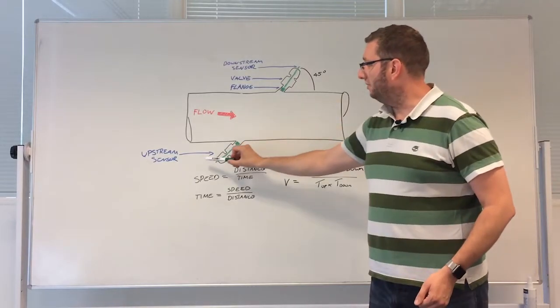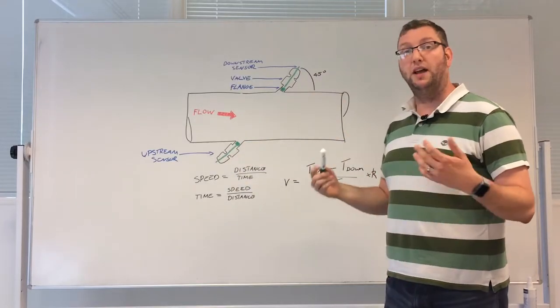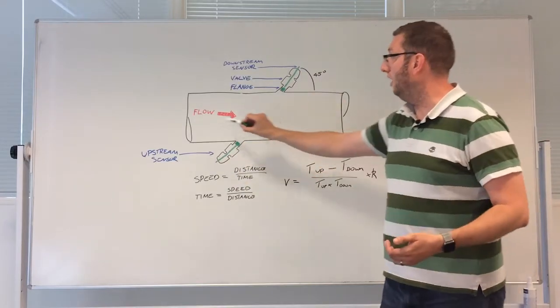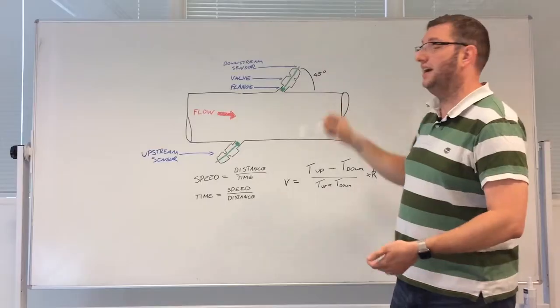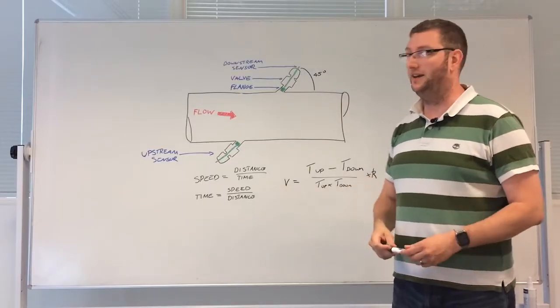The other thing is here we've got labels upstream and downstream. Now those relate to the direction of flow marked here by the red arrow. So the upstream sensor is close to the direction of flow, the downstream sensor is downstream of it. It's as simple as that.